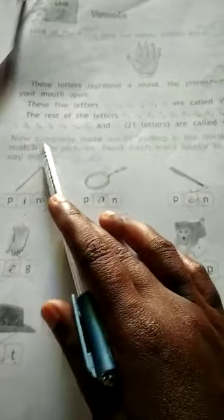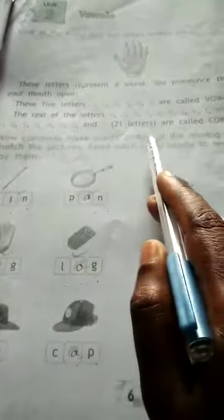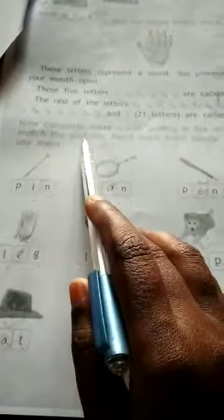Now, complete these words putting in the missing vowels to match the pictures. Read each word loudly to learn how to say them.